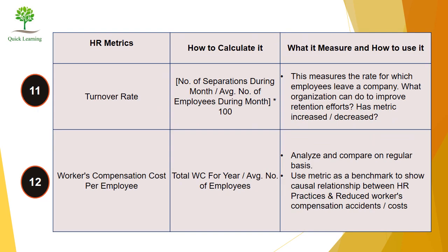Eleventh, Turnover Rate. Its formula is: (number of separations during the month divided by average number of employees during the month), expressed as a percentage. This helps understand the employee leaving rate and how to improve retention efforts in the company.